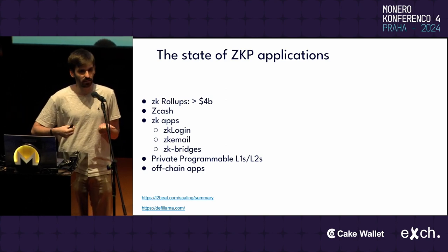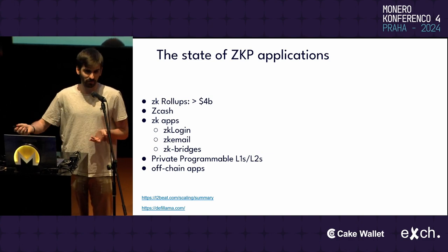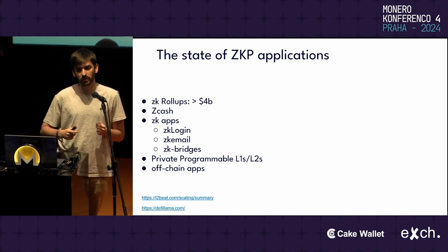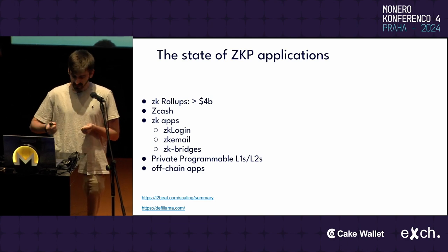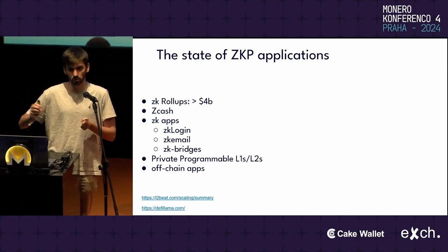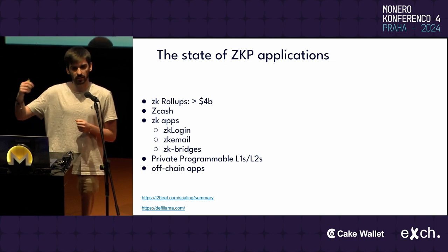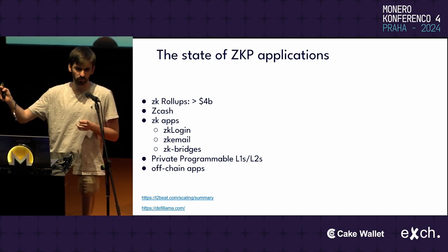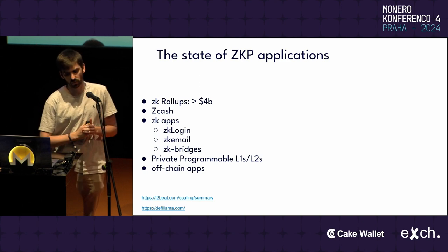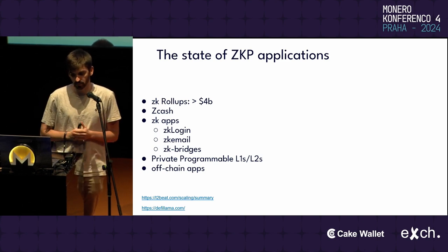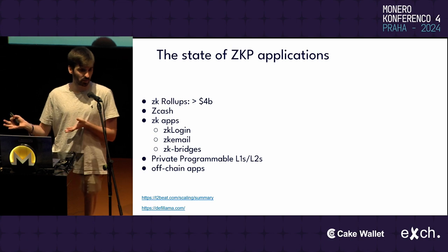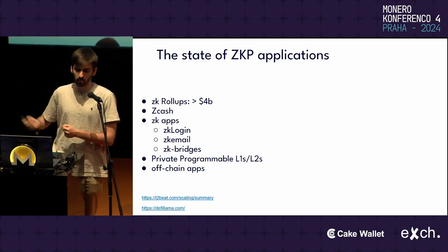That means having the ability to perform private transactions. But now these zero-knowledge proofs are mainly used for scalability — we have rollup or L2 blockchains where computation is performed off-chain and then a validity proof is submitted to an L1 blockchain. We also have Zcash, a layer-one blockchain with private transactions, Filecoin, which heavily uses zero-knowledge proofs, and some more applications.